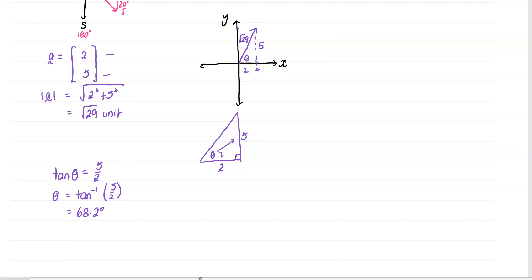So pretty straightforward. What we now say is the magnitude is root 29 and it's in a direction, it's heading off here, that is 68.2 degrees true. So therefore the bearing is 68.2 degrees true.